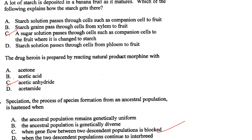A lot of starch is deposited in a banana fruit as it matures. A sugar solution passes through cells such as the companion cell to the fruit where it is changed to starch. Answer is option C.